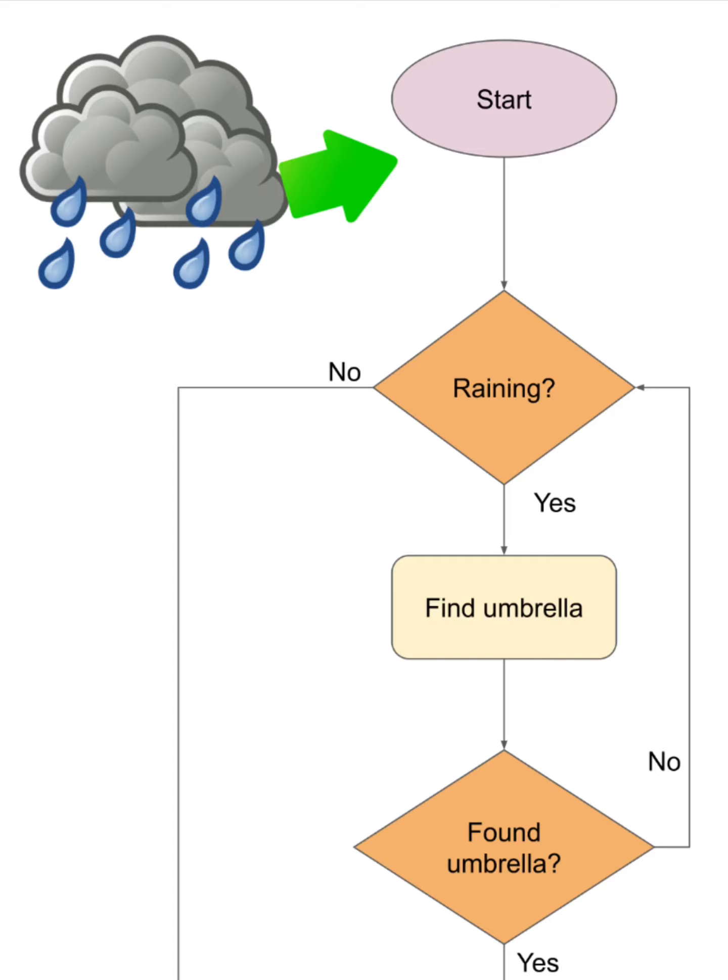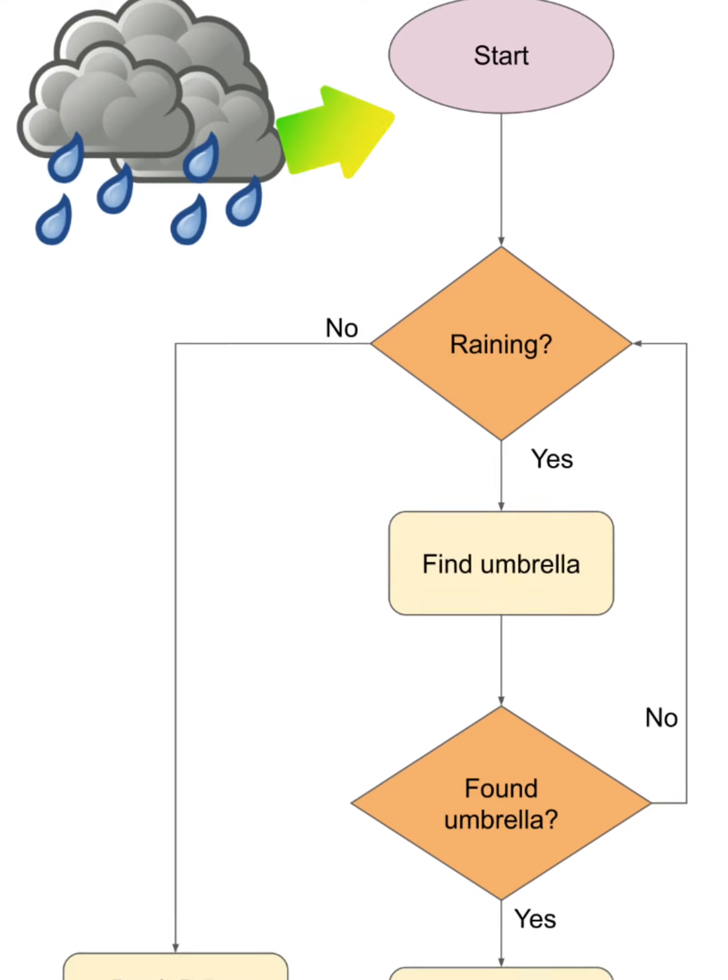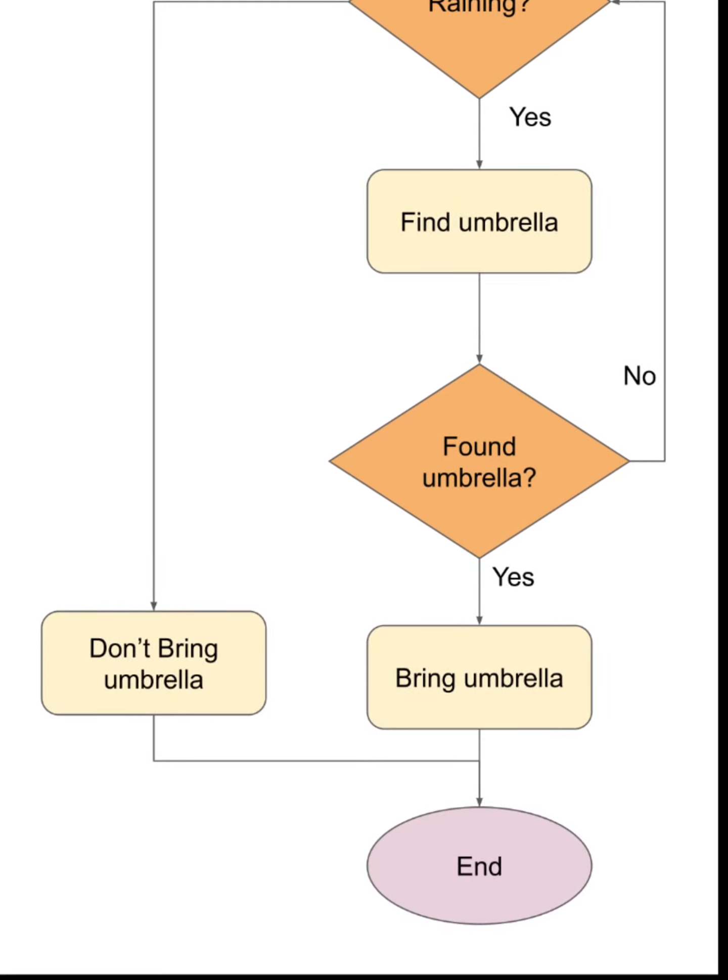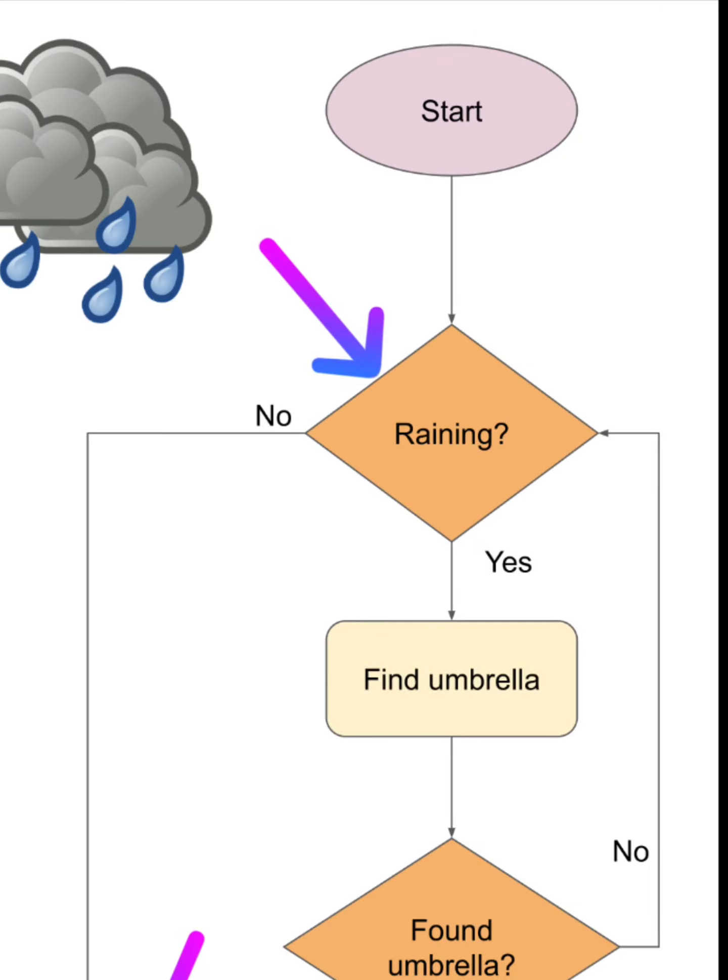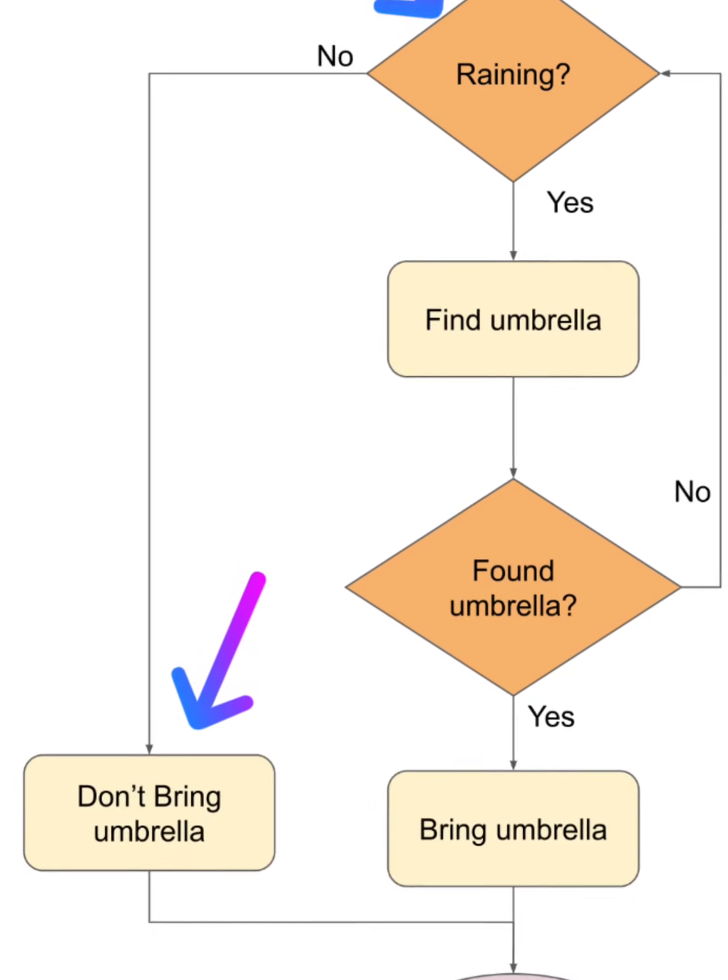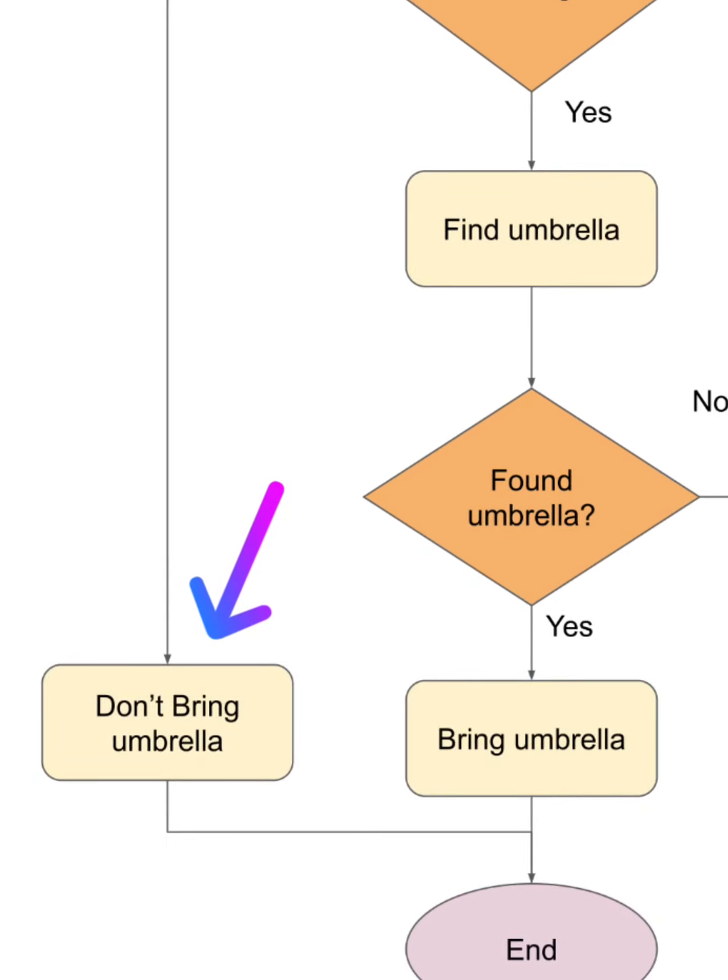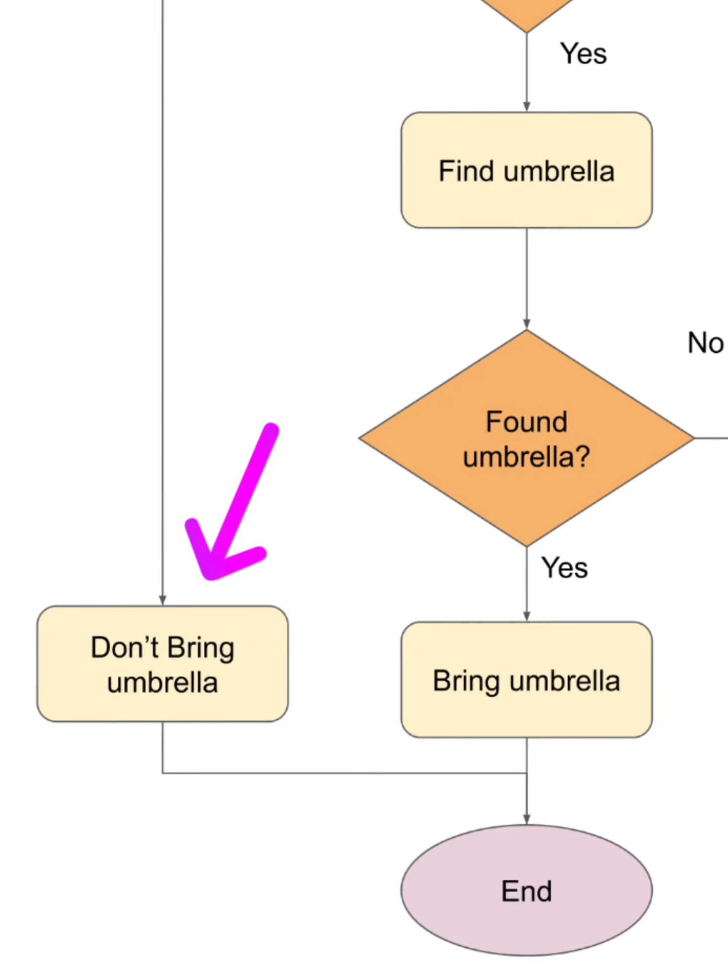This flowchart starts at the top where it says start and flows down the page. However, you're not always going down the page if you follow the instruction. The diamond shape asks a question. It's making a decision. Is it raining? If it's not raining then you're going to go to the left of the flowchart and it will say don't bring an umbrella and then you can flow straight down to the end.